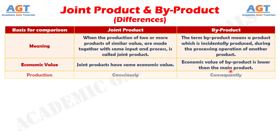No. 3: The production of the joint product is performed intentionally by the management of the respective organization, whereas there is no intention to manufacture the by-product, and so they are produced incidentally.